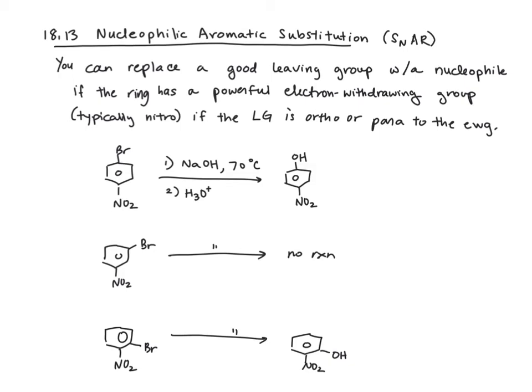This video covers nucleophilic aromatic substitution and addition elimination. For nucleophilic aromatic substitution, you can replace a good leaving group with a nucleophile if the ring has a powerful electron withdrawing group, typically nitro groups, and the leaving group must be ortho or para to the electron withdrawing group.